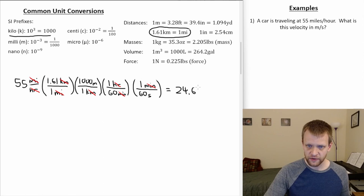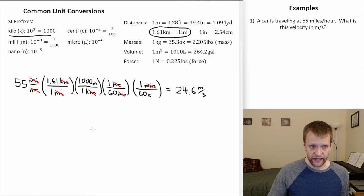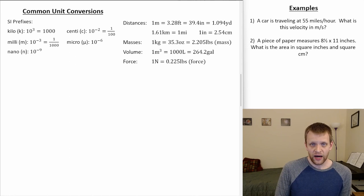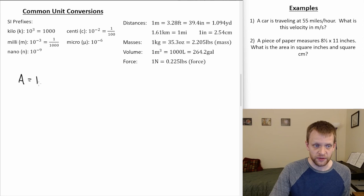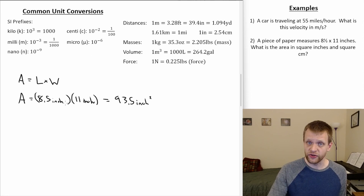So that's our general method for unit conversions — introducing conversion factors so the units we're trying to get rid of cancel out. Let's look at another example. Let's say a piece of paper measures 8½ by 11 inches, and we want to find the area in both square inches and square centimeters. Since this is a rectangle, area is length times width. In inches, that's 8.5 inches times 11 inches. When we multiply those together, we get 93.5 square inches — because not only are the numbers multiplied together, the units are multiplied together as well.